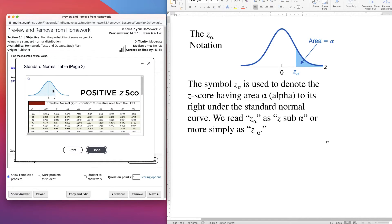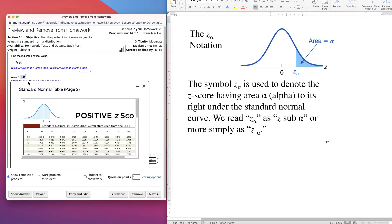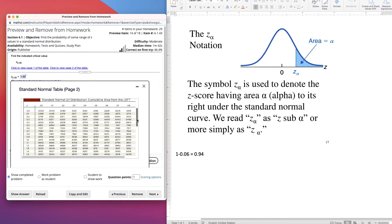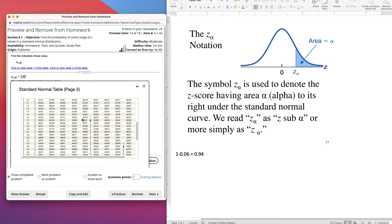So what normally you have to do is find 1 minus 0.06. So 1 minus 0.06 is 0.94. So I'm looking for 0.94 area. And so that would make 0.06 area to the right.